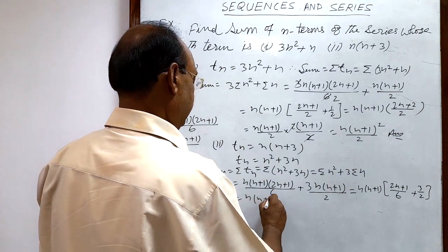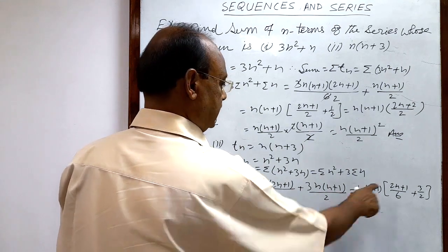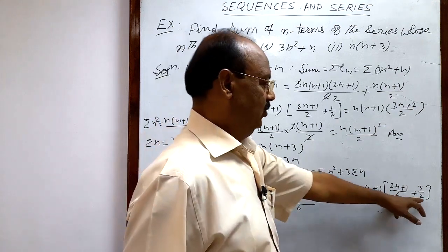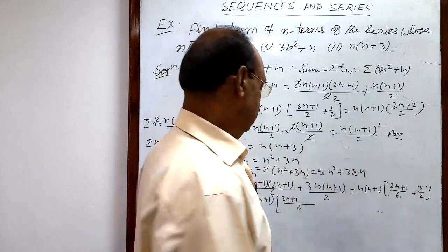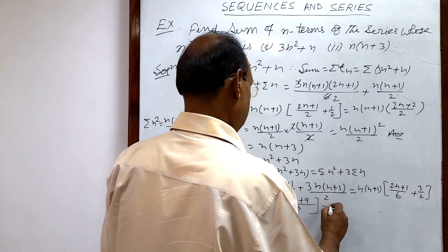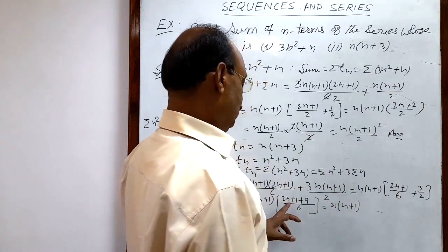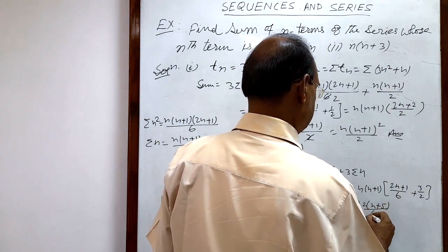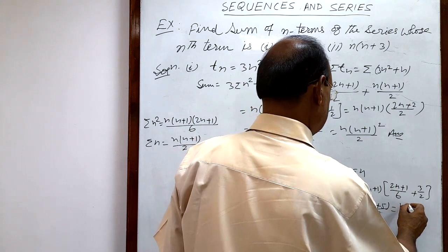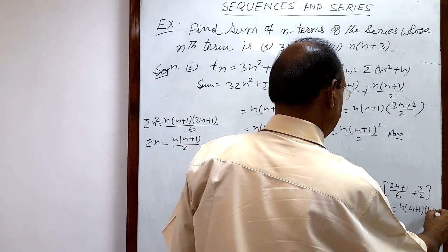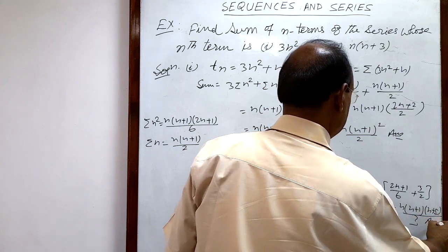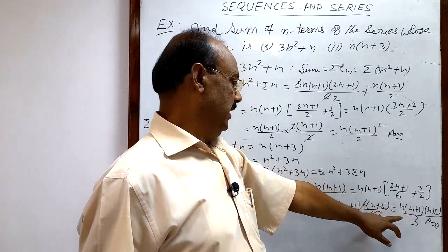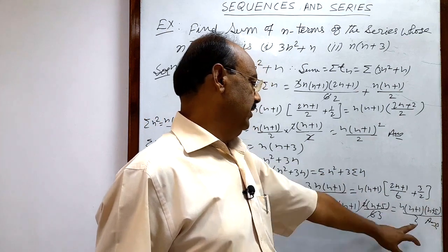Taking LCM of 6, the numerator becomes (2n+1) + 3·3 = (2n+1) + 9 = 2n+10. Simplifying, this is n(n+1)(2n+10)/6 = n(n+1)·2(n+5)/6 = n(n+1)(n+5)/3. So the answer for the second part is n(n+1)(n+5)/3.